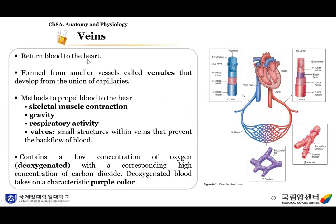Veins return blood to the heart. Veins are formed from smaller vessels called venules that develop from the union of capillaries. There are several methods to propel blood to the heart: skeletal muscle contraction, gravity, respiratory activity, and valves. These valves are small structures within veins that prevent the backflow of blood. Veins contain a low concentration of oxygen, which is called deoxygenated, with a corresponding high concentration of carbon dioxide. The deoxygenated blood takes on a characteristic purple color.